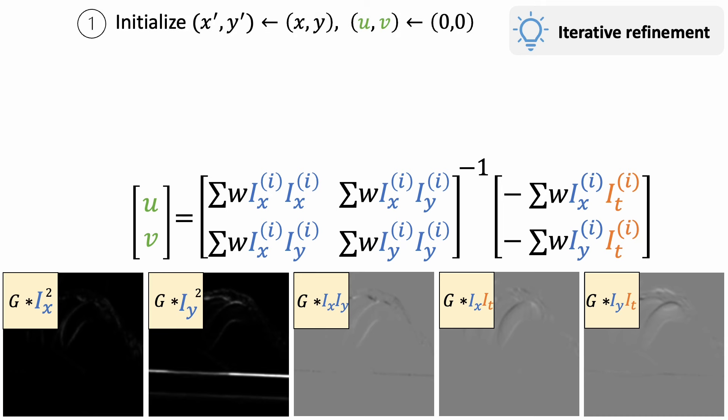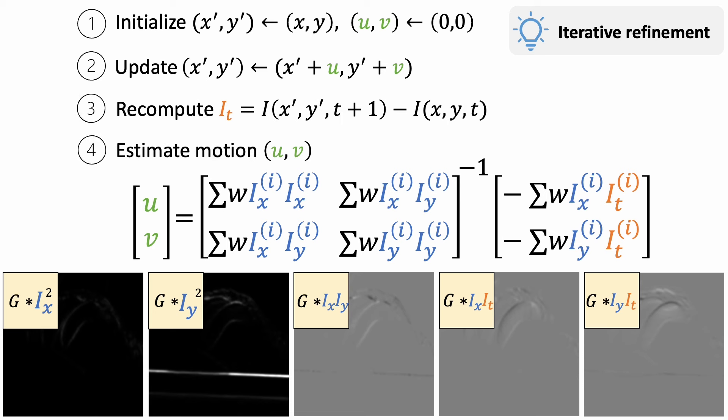We denote the point position in the next frame as x-prime, y-prime. Since we don't know where the point goes, we initialize it at the same position xy at time t, assuming zero motion. With the temporal derivative, we can estimate the motion using our equation. Now we have a better idea of where the point position is in the next frame. We update the position with the estimated motion, recompute the temporal derivative, and estimate the residual motion. We iteratively refine the motion until the residual motion is sufficiently small.